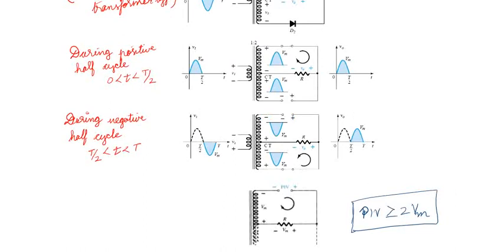During the negative half cycle, the upper terminal is negative and the center terminal is positive. With respect to the bottom terminal, the bottom terminal is positive and the center terminal is negative. So diode D2 will conduct (bottom terminal is positive) and diode D1 is off (upper terminal is negative). The current flows through D2 through R in the same direction as the positive half cycle. So for both positive and negative half cycles, current flows in the same direction, and the output is always positive — this is a full wave rectifier using center-tap transformer.